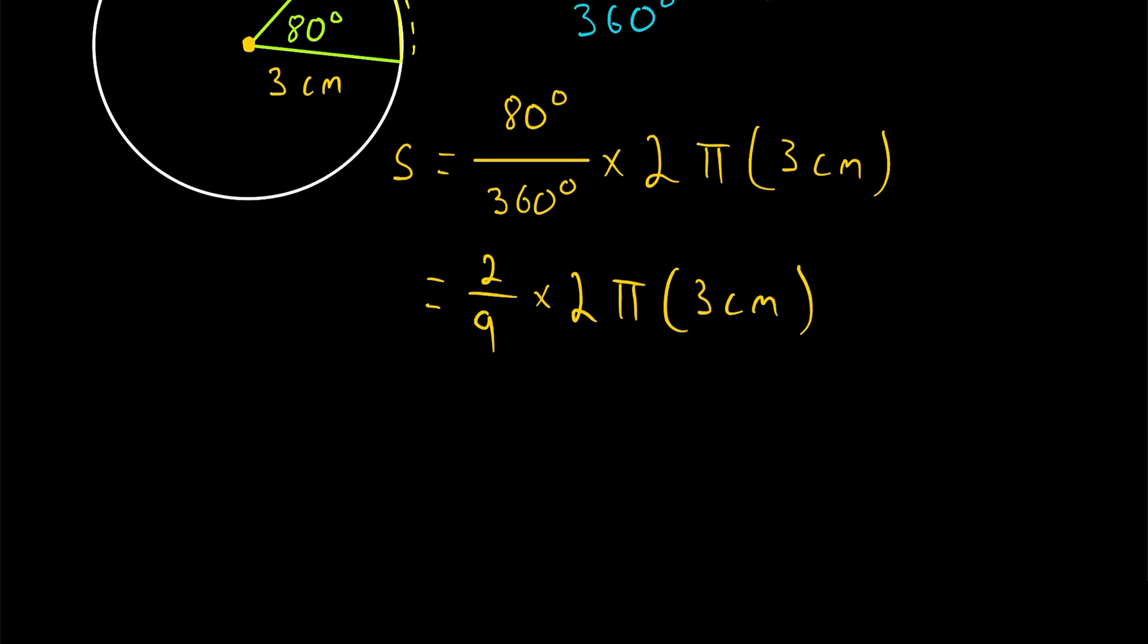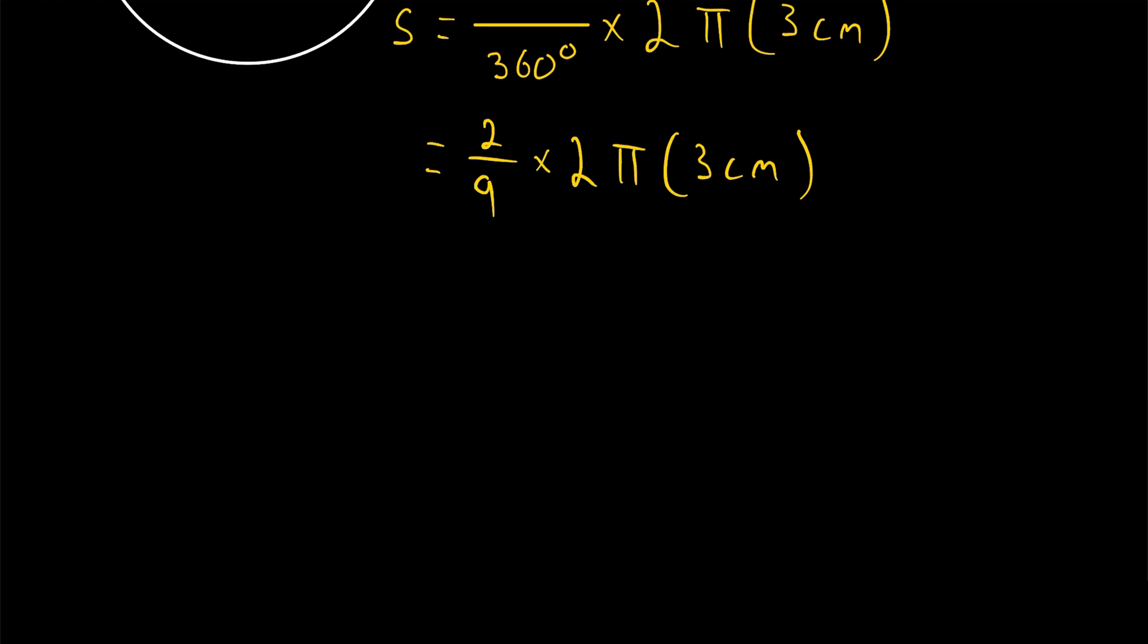Continuing to simplify, order doesn't matter in multiplication, so we can move these factors around however we please. What we'll do is bring these two factors, 2 and 3 centimeters, into our numerator with 2. So we'll have 2 times 2 times 3 centimeters, and all of this is over that denominator of 9, and it's getting multiplied by pi.